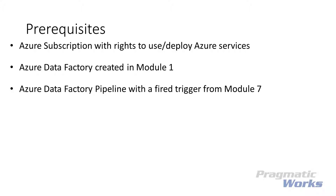Before we get into an overview of the tasks in this lab module, let's discuss what you will need before you start. You'll need an active Azure subscription with rights to use and deploy Azure services. You'll need the Azure Data Factory we created in Lab Module 1. Ideally, you would have scheduled a pipeline as part of Lab Module 7 to be able to monitor it, but any executed pipelines via a trigger should be sufficient. In order to see the Azure SSIS integration runtime that is walked through in this lab, you will also need to have completed Lab Module 2.